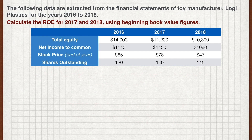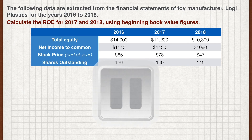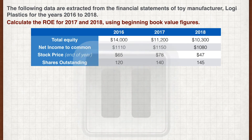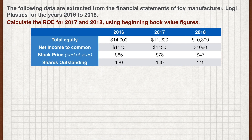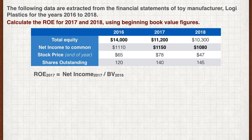Next, calculate the ROE for 2017 and 2018 using beginning book value figures. The beginning book value is simply the ending book value of the preceding year. So to calculate ROE for 2017, we divide the 2017 net income by the 2016 book value. We get an ROE of 8.21%.